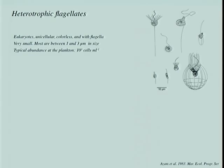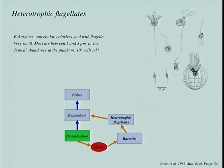These grazers are eukaryotes, not prokaryotes. They are unicellular, colorless, heterotrophic, flagellated, and very small — most between one and three microns, at the very limit of the eukaryotic cell. Their abundance can be around 1,000 cells per milliliter. This is a very simplified cartoon of the trophic food webs in the ocean. The classical food web has phytoplankton primary producers eaten by zooplankton, which are eaten by fish.